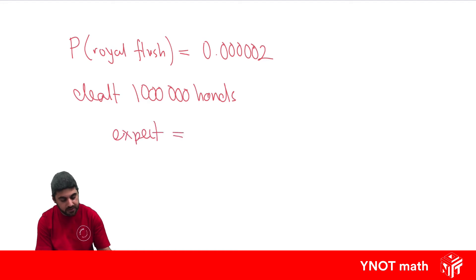We'd expect the probability, which is 0.0000002, multiplied by the number of events, that's a million hands. Doing this gives you 2. So you'd only expect 2 royal flushes if you were dealt 1 million hands.